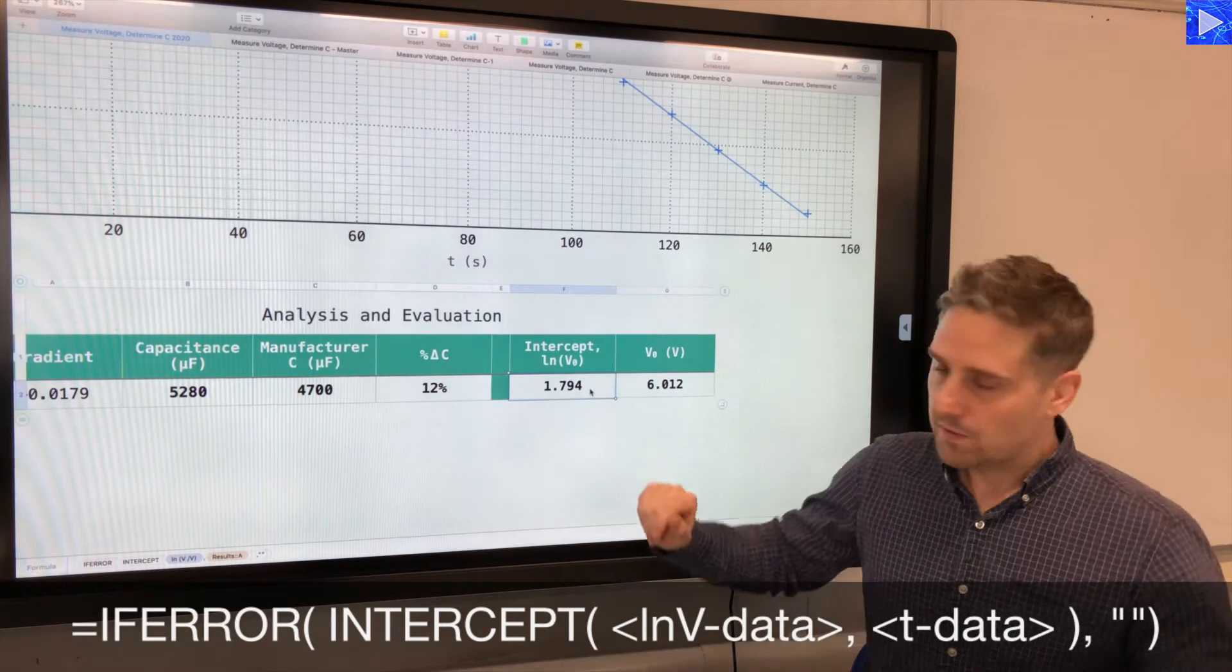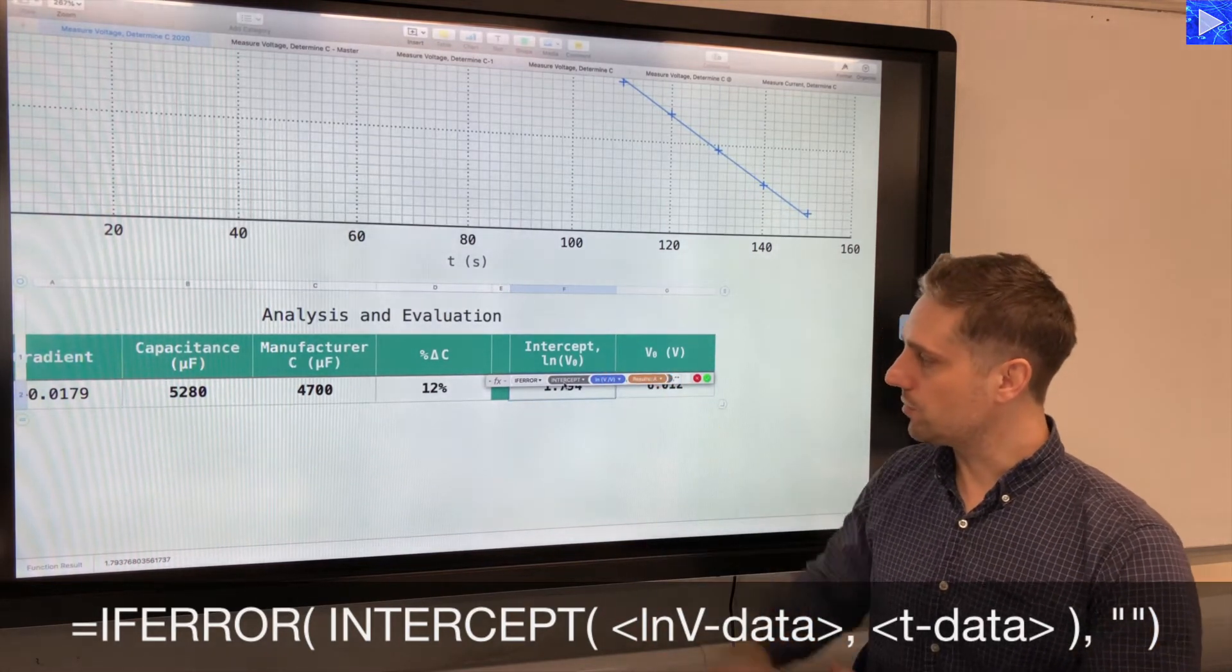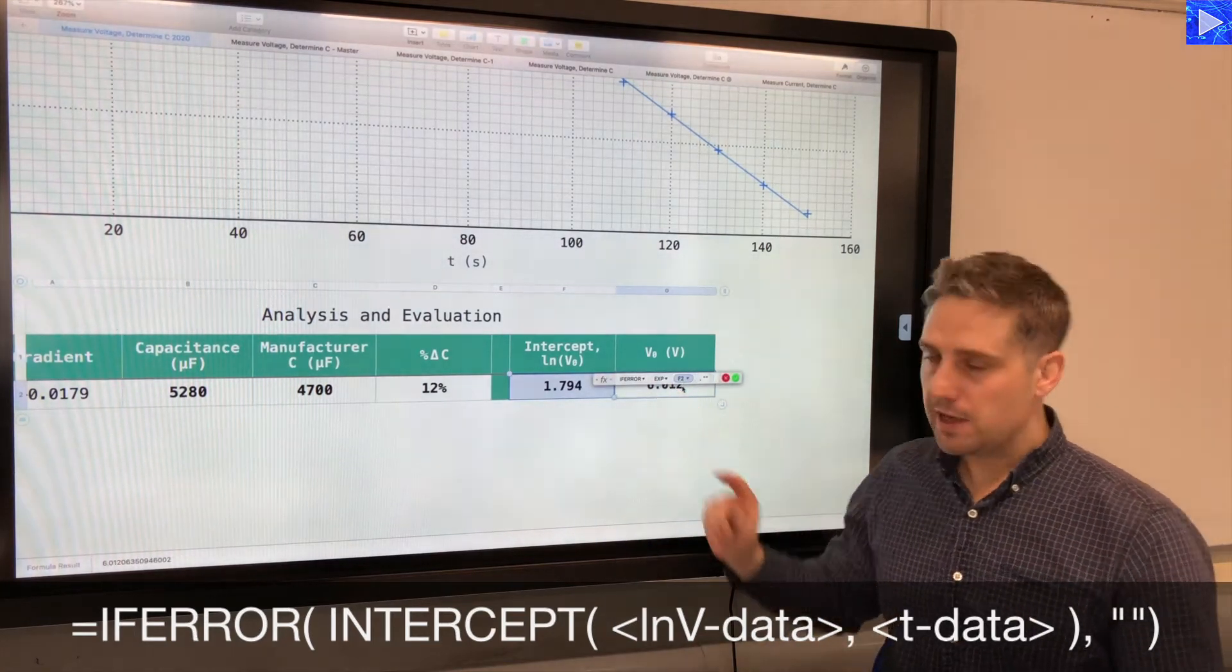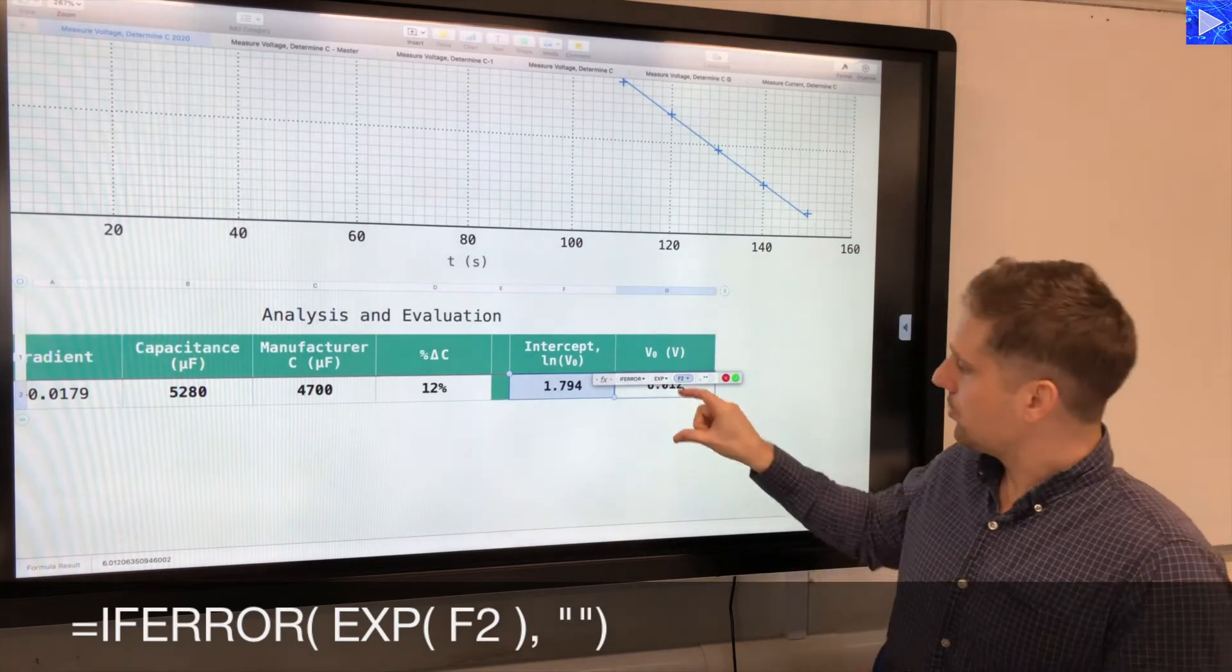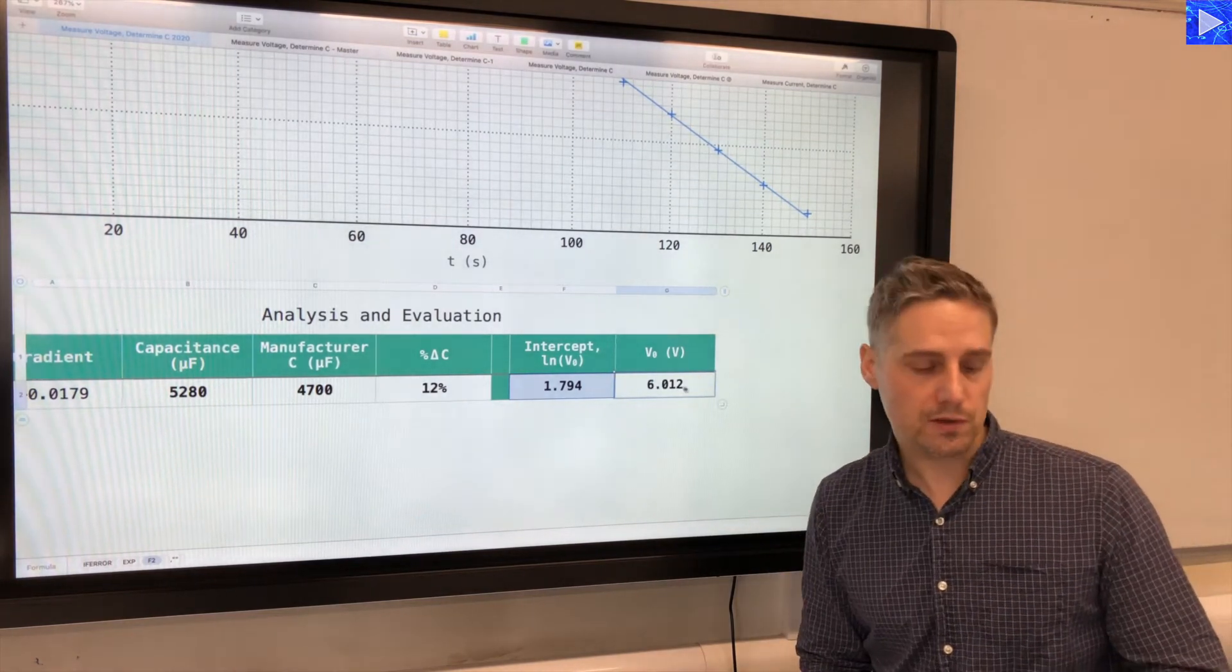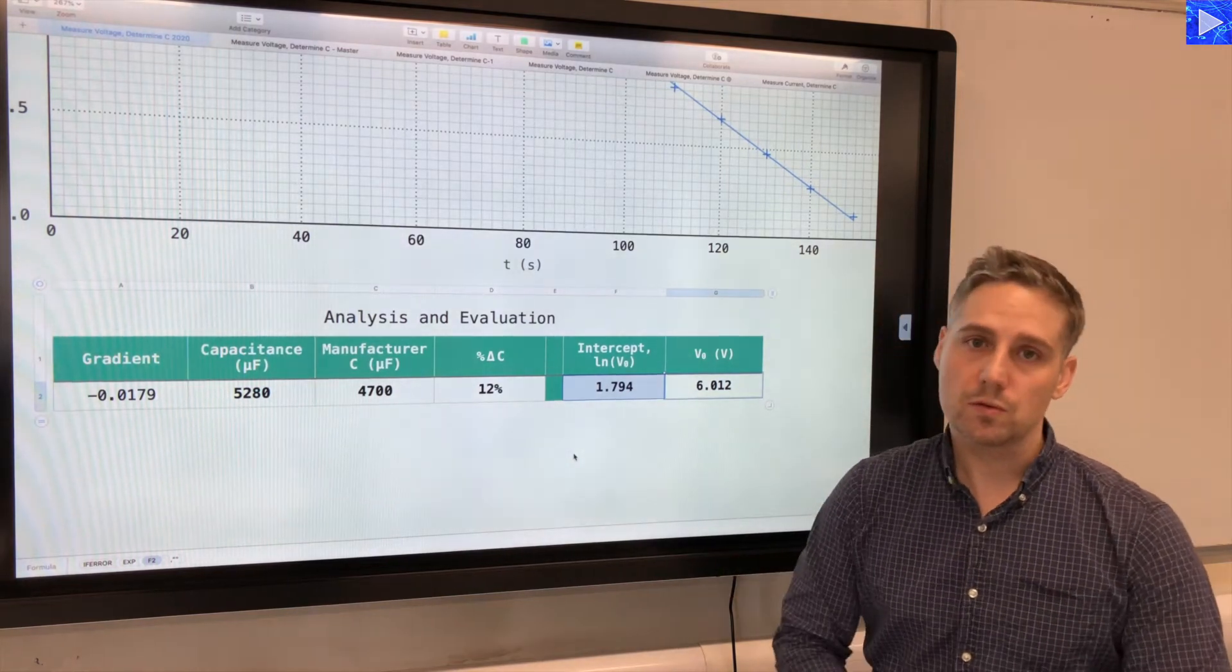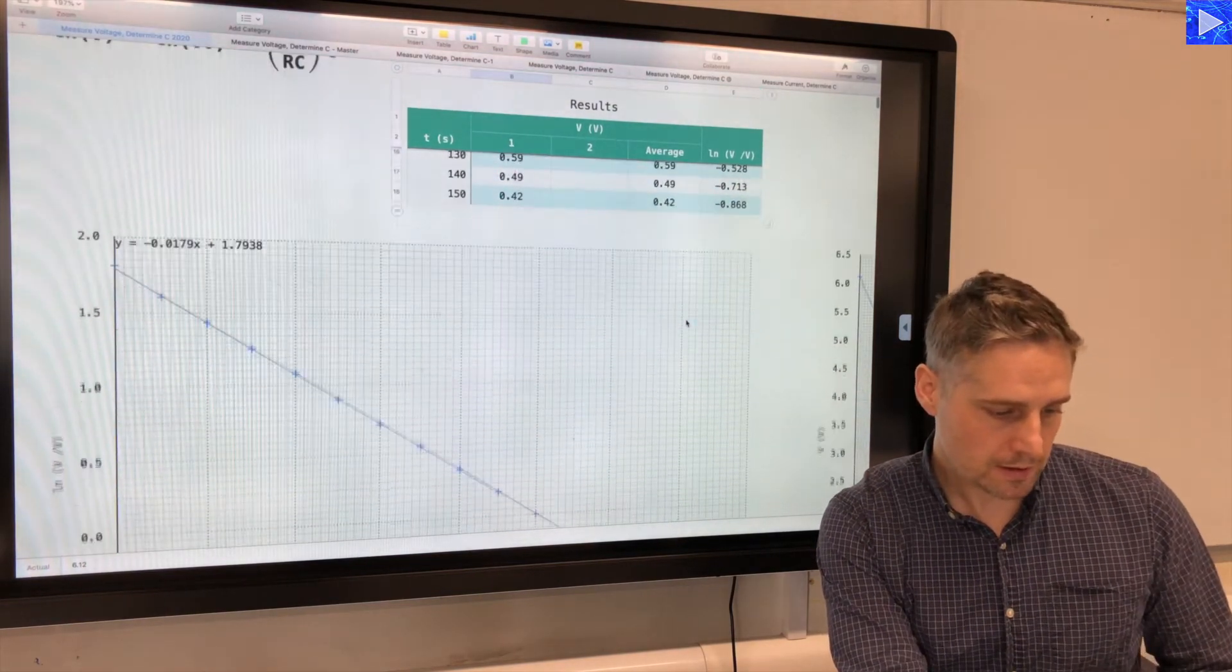Over here we have the intercept. So this is using the built-in intercept formula, very similar to the slope formula. You put in your y data array, you put in your x data array, but obviously this is calculating the intercept instead. Now when we have the intercept, we can calculate V0. V0 is E raised to the power of the intercept. So I use the built-in spreadsheet formula, it's called EXP for exponential. So EXP, and then it takes one argument, what number do you want to raise E to the power of? We want to raise it to the power of that intercept there, and that gives us 6.012. So we've calculated using the first method, our value of capacitance, and done a comparison with the manufacturer value there. We've also got V0, we can compare that to the value that we actually measured, which is 6.12.